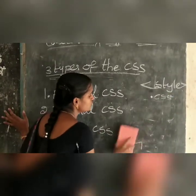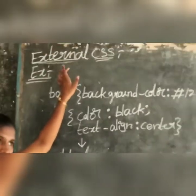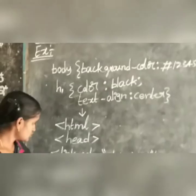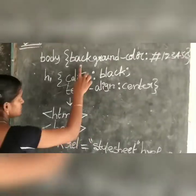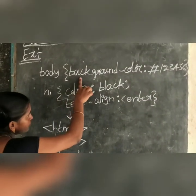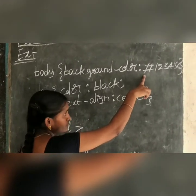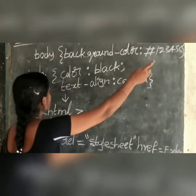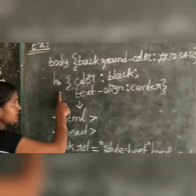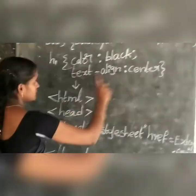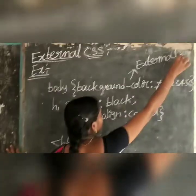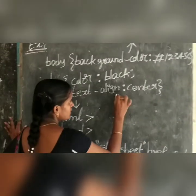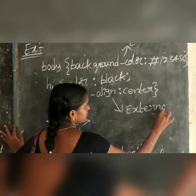In the external CSS file, we write the styles. For example, in the body selector, we give the background color using a hexadecimal code. Then for H1, we set the heading color to black and the text alignment to center. This entire file is saved as an external .css file.